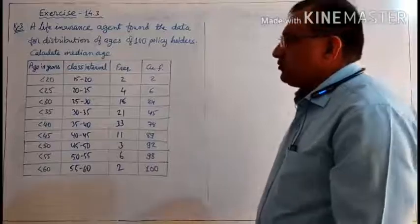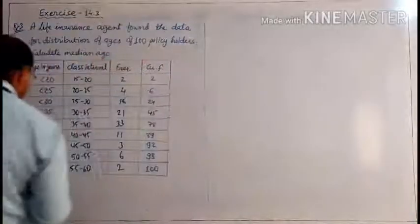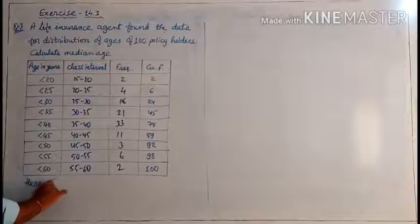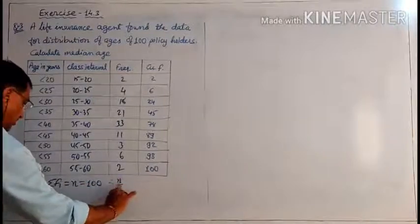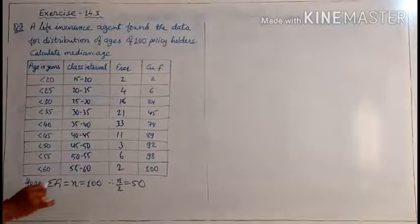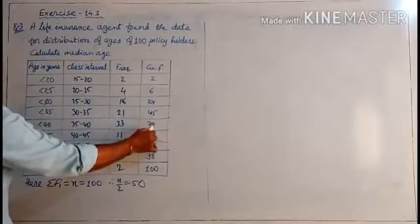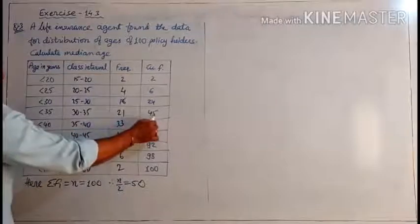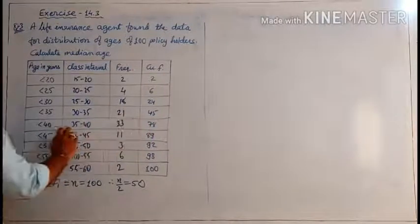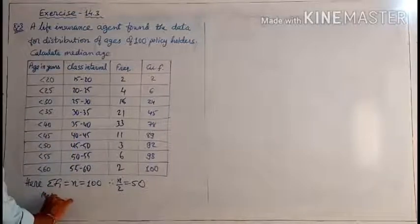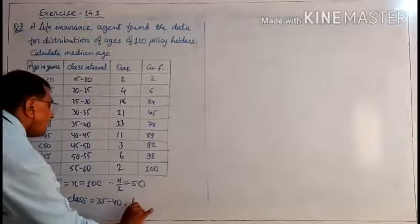Is it clear? So this is the frequency. Now we have to go for median. For median, we need the number of observations: sigma fi = n = 100, so n by 2 = 50. The 50th observation is the middlemost. From the cumulative frequencies, up to 45 policyholders fall before this class, and from 46 up to 78 fall in the 35–40 age group. So the 50th one is in this group.